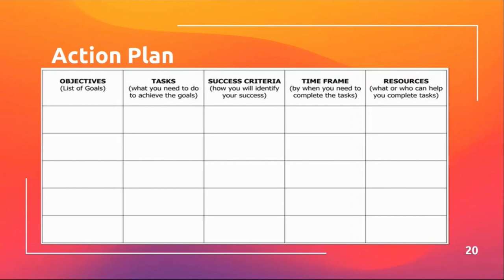Now I would like you to have a look at those objectives that you and your team have created, and the tasks that you need to do to achieve that objective, your success criteria, the timeframe, and the resources you're going to need. In the next column, or under resources, try and think about what policies you might need.